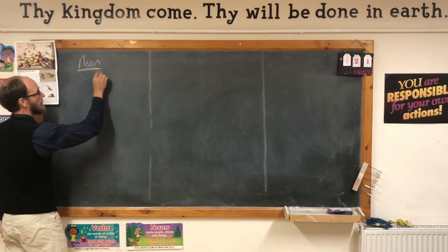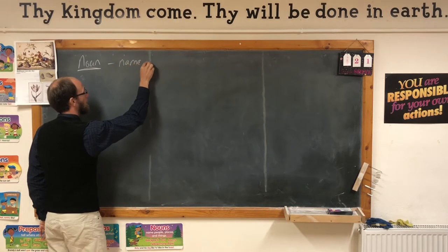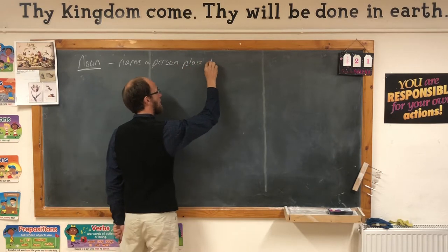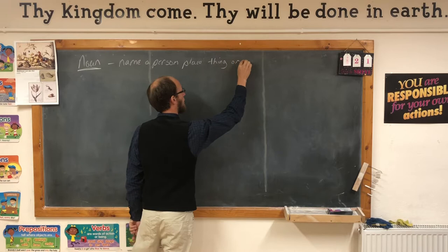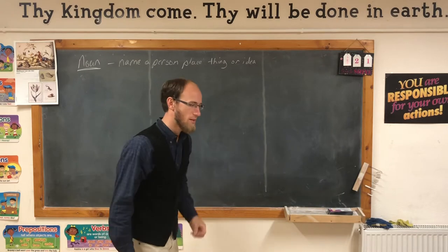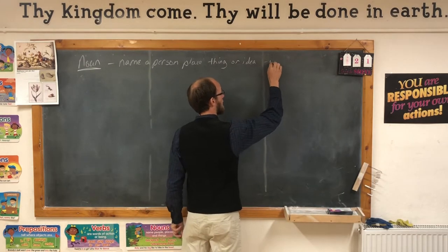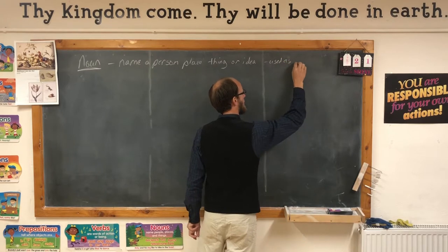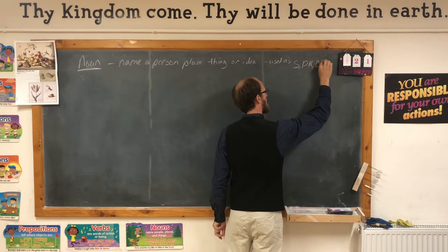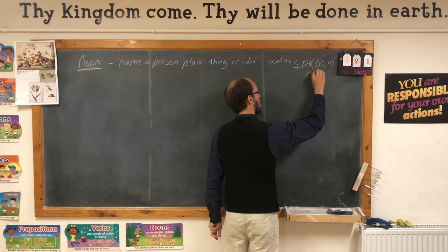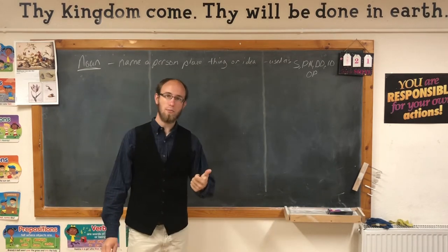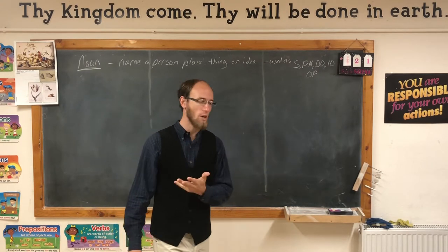Nouns name a person, place, thing, or idea. And they can be used in sentences as subjects, predicate nominatives, direct objects, indirect objects, and objects of the preposition. So a noun is a word that names a person, place, thing, or idea, and can be used as a subject, predicate nominative, direct object, indirect object, or object of a preposition.